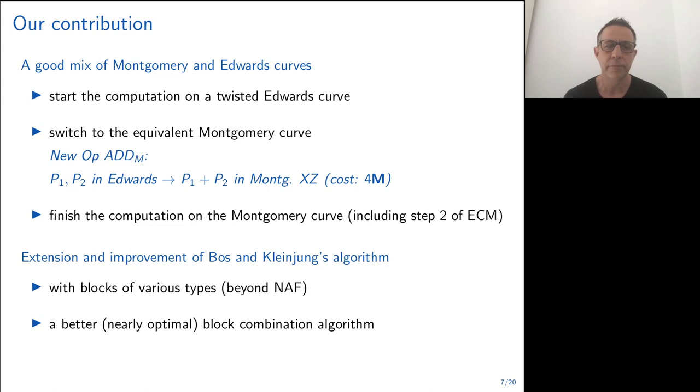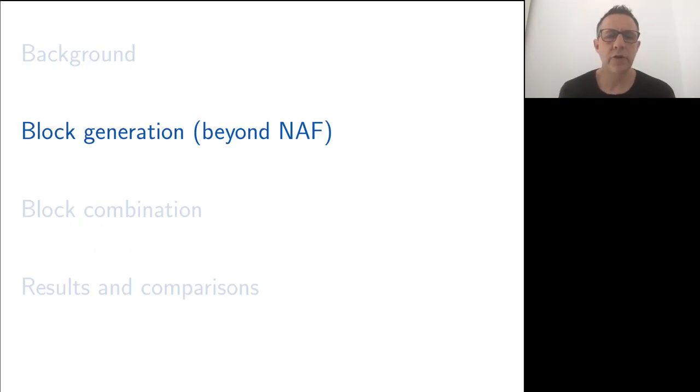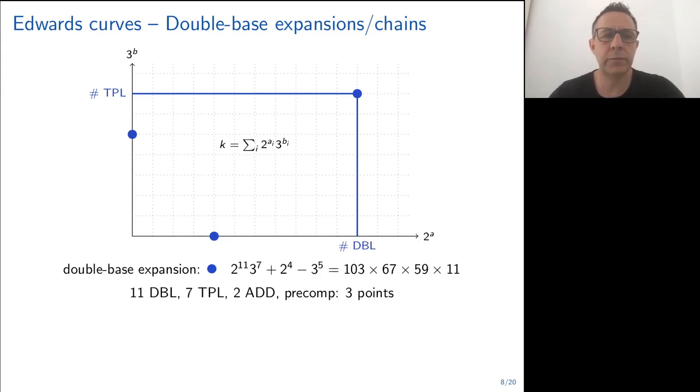For the scalar multiplication, we have proposed an extension of Bos and Kleinjung's algorithm in two ways. The first is with the generation of blocks of various types, beyond the usual NAF, and also a better combination algorithm. In order to take advantage of fast tripling operation on Edwards curves, we consider double base expansions and double base chains. In that form, a number is written as a sum of mixed powers of 2 and 3.